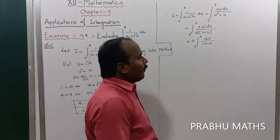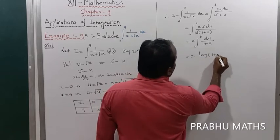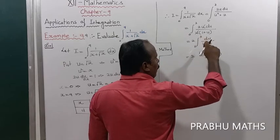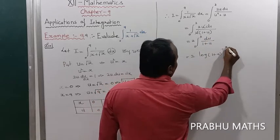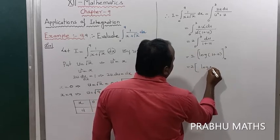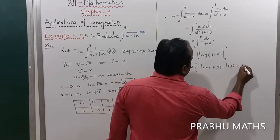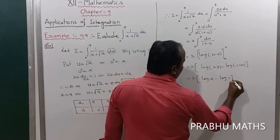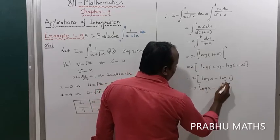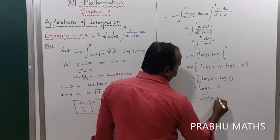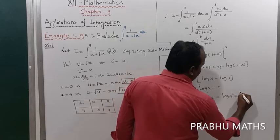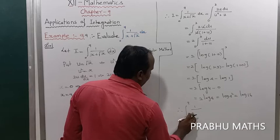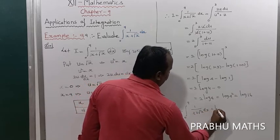Since the denominator differentiates to give the numerator, the integral of 1 over (1 plus u) gives log(1 plus u). So I equals 2 times [log(1 plus u)] from 0 to 3, which equals 2 times [log(1 plus 3) minus log(1 plus 0)], equals 2 times [log 4 minus log 1]. Since log 1 equals 0, this equals 2 log 4, which equals log 4 squared, that is log 16. Therefore the integral from 0 to 9 of 1 divided by (x plus root x) dx equals log 16.